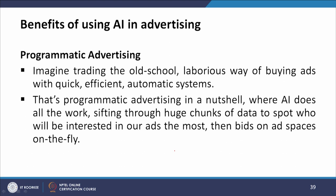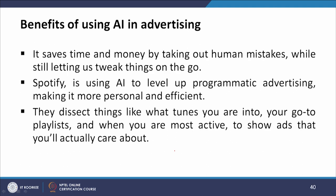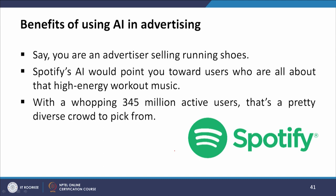The next benefit is programmatic advertising. Imagine replacing old-school laborious ways of buying ads with quick, efficient, automatic systems — that is programmatic advertising in a nutshell, where AI sifts through huge chunks of data to spot who will be most interested in ads, then bids on ad spaces on the fly. It saves time and money by removing human mistakes while still allowing tweaks on the go. Spotify uses AI to level up programmatic advertising, making it more personal and efficient. They analyze what tunes you listen to, your go-to playlists, and when you are most active to show relevant ads. For example, an advertiser selling running shoes would be pointed towards users who listen to high-energy workout music. With 345 million active users, that is a diverse crowd to target.